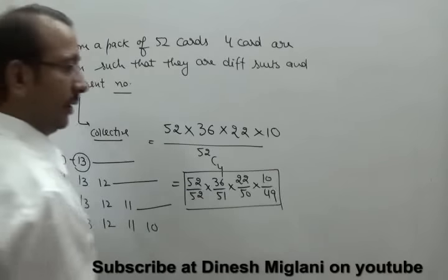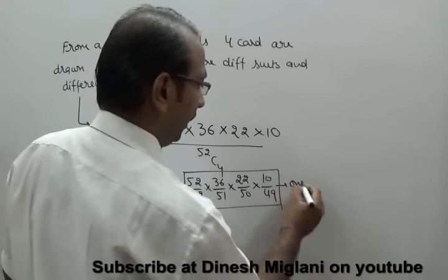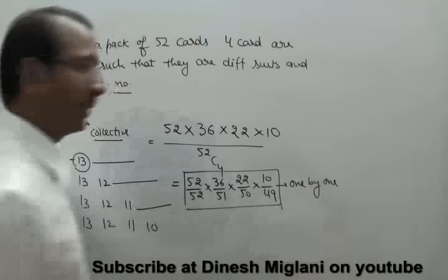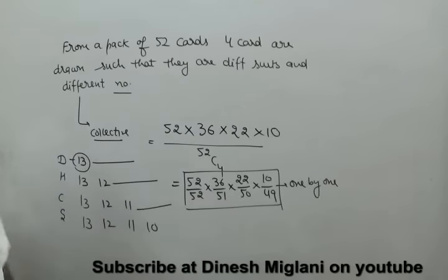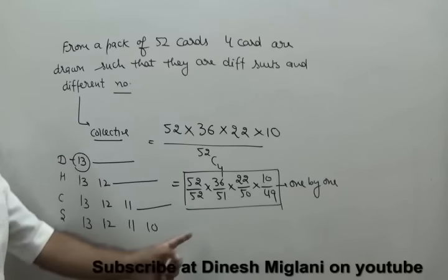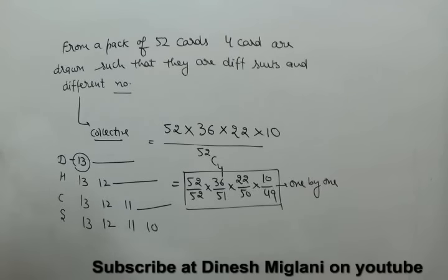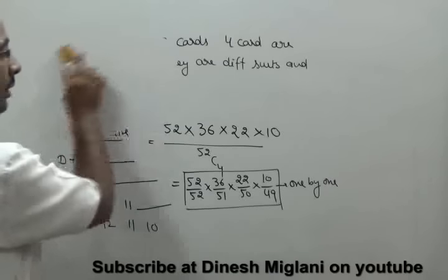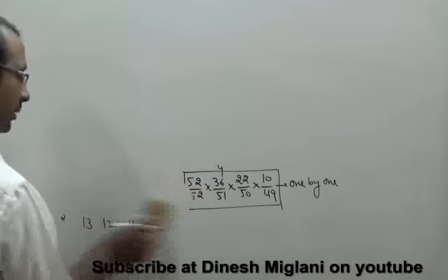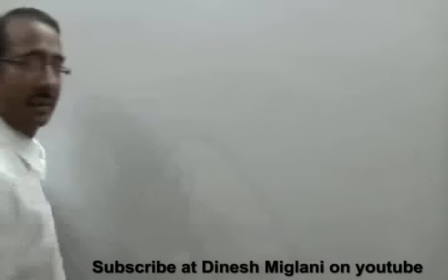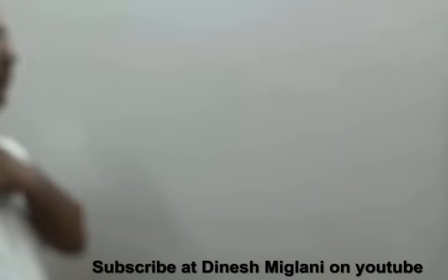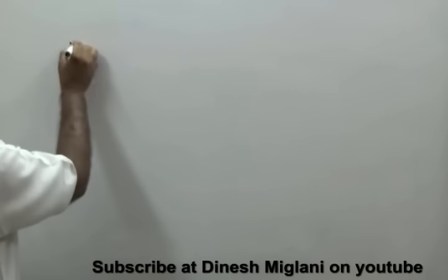In general, when nothing is mentioned in the question, we assume cards are drawn at random (collectively) and use the combination-based approach. If the question specifies cards are drawn one by one, we apply the sequential probability method. After understanding this concept, the next point introduces some more terms.